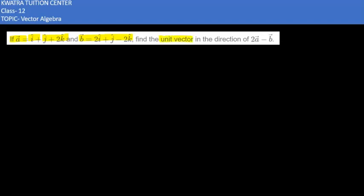find the unit vector in the direction of 2a vector minus b vector. So, in this question, first we need to find the value of 2a vector minus b vector.